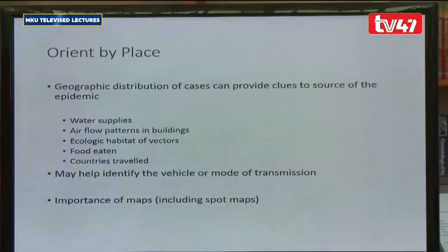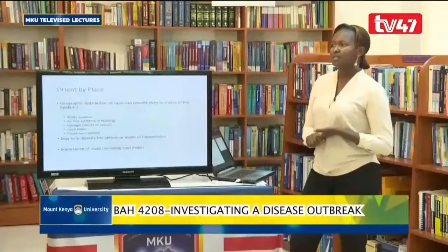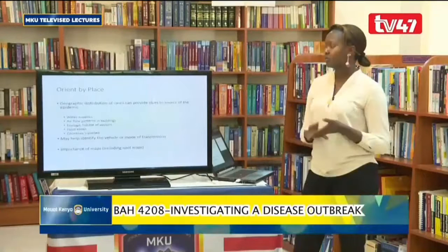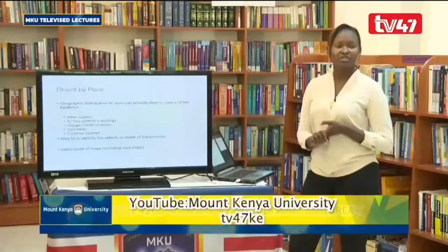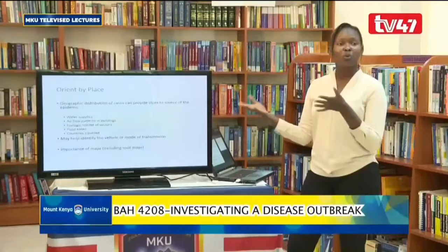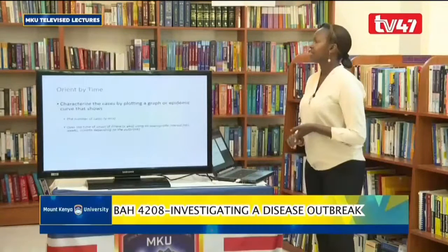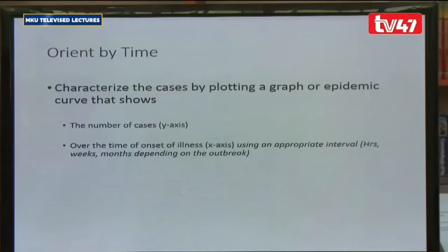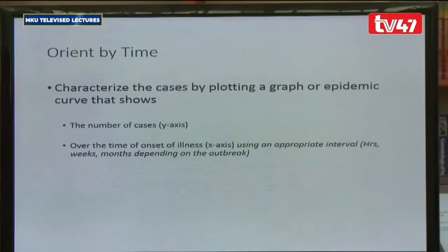Maps are extremely important, including spot maps. Currently you can see different maps showing where COVID-19 is occurring, and the intensity of color indicates case density. Time is also very important, especially the onset of the disease. This characterizes cases by plotting an epidemic curve — a graph with number of cases on the y-axis and time of onset of illness on the x-axis.